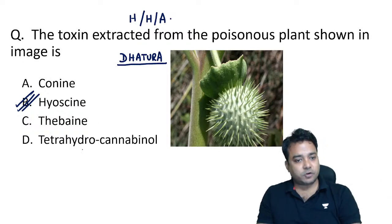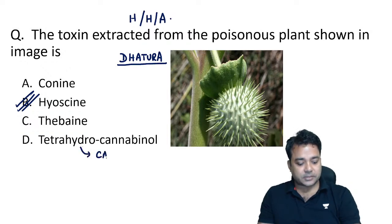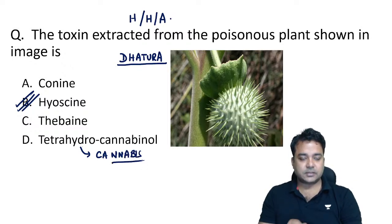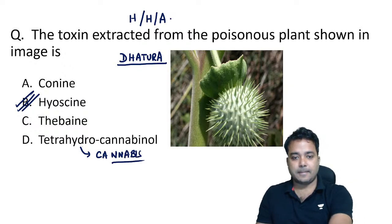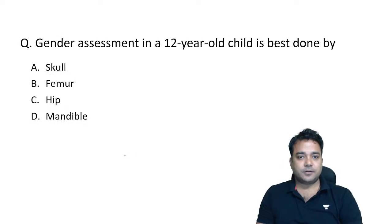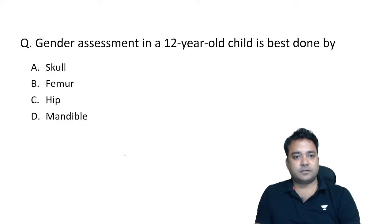Tetrahydrocannabinol (option D) is the active principle of cannabis.